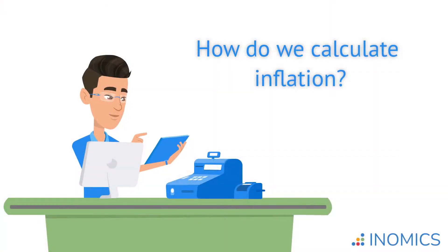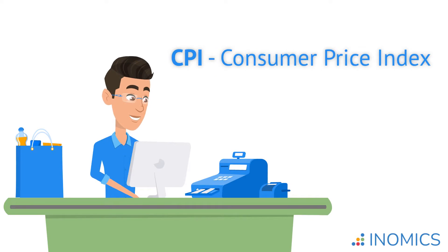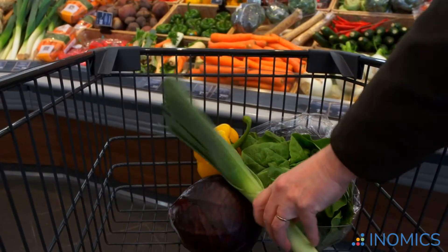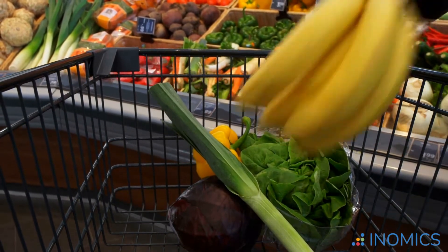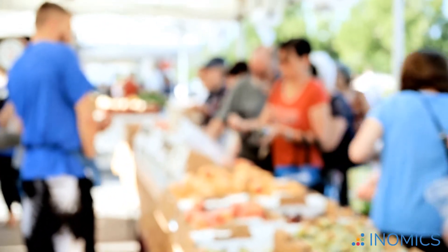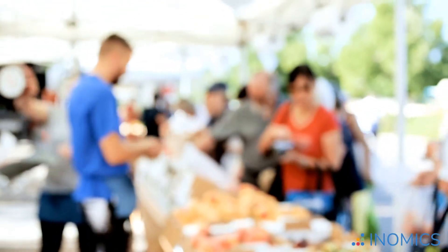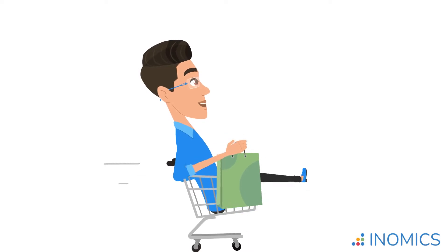To help us understand inflation, let's look at the most common way to calculate it: the Consumer Price Index, or CPI. The CPI is a theoretical basket of consumer goods. This basket is supposed to contain items that an average person buys regularly, such as food, household supplies, or heating bills. It aims to reflect the average cost of living in any given place.